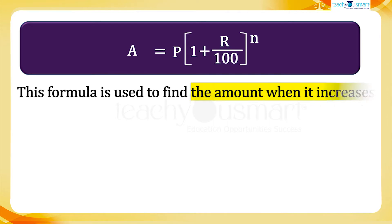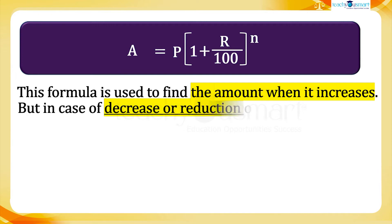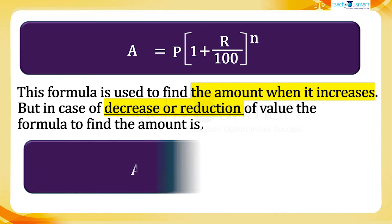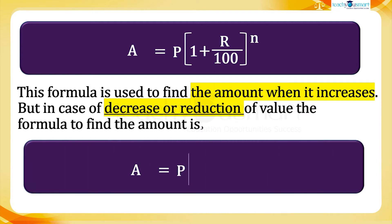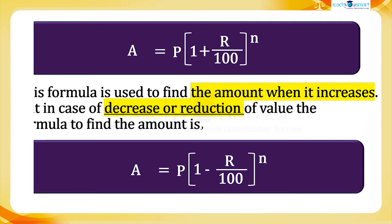This formula is used to find the amount when it increases. But in the case of decrease or reduction of value, the formula to find the amount is A equals P multiplied by 1 minus R divided by 100, the whole raised to n. Let's solve some examples using these formulas.